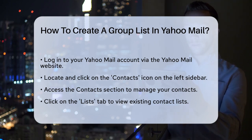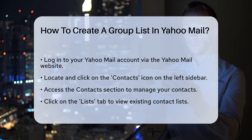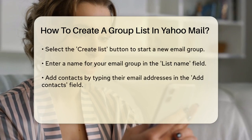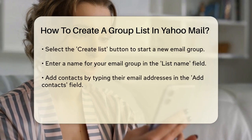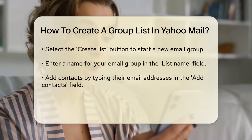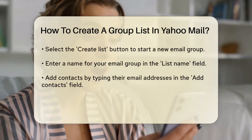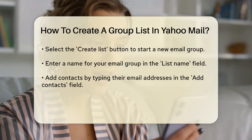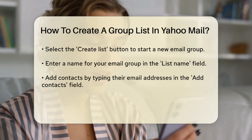In the Contacts section, you'll see several tabs at the top. Click on the Lists tab. Here, you'll find all your existing contact lists and you'll also see a Create List button. Click this button to create a new email group.